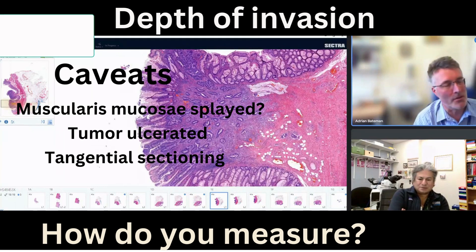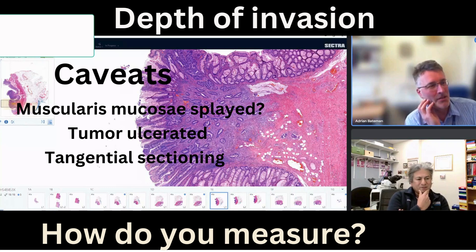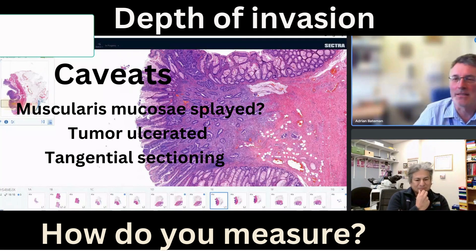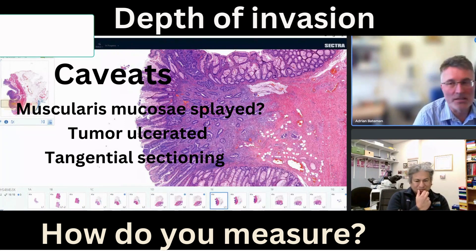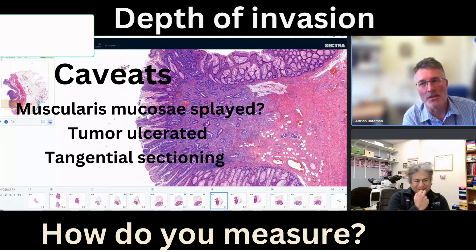You can measure on a digital system to 100 millimetre in terms of a line on a section. But in reality, your potential error must be much greater than that — are you sure you're measuring absolutely the deepest level? How many levels have you looked at? How well orientated is the specimen? And also, if the muscularis mucosa is splayed, where do you measure from? If the surface is ulcerated, where do you measure from? So these are all caveats that we have to do our best and use our professional opinion to work around.